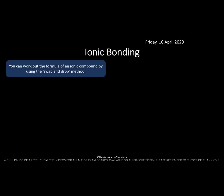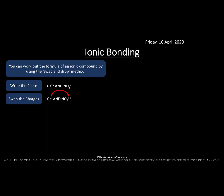We're going to use the 'swap and drop' method to work out the formula of an ionic substance from its ions. For example, calcium (Ca²⁺) and nitrate (NO₃⁻): we swap the charges over — Ca gets a subscript of 1 (from the nitrate's charge) and NO₃ gets a subscript of 2 (from calcium's charge) — then drop them down as subscripts.